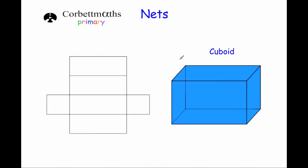Next, a cuboid. Here we've got a cuboid, and this rectangle here would be the base of the cuboid. Then 1, 2, 3, 4 — those two squares and those two rectangles would fold up to be the sides of the cuboid, and then this rectangle would fold over to be the top of the cuboid. So that shape could be the net of a cuboid.